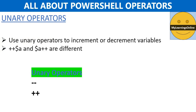Next one is unary operators. Unary operators are used to increment or decrement variables. We can put a unary operator before or after a variable and it has different meanings. Placing it before will increment or decrement the variable first and then perform the action, while placing it after will perform the action first and then increment or decrement. These operators play a very critical role in for loops, which we will discuss in detail in coming videos.